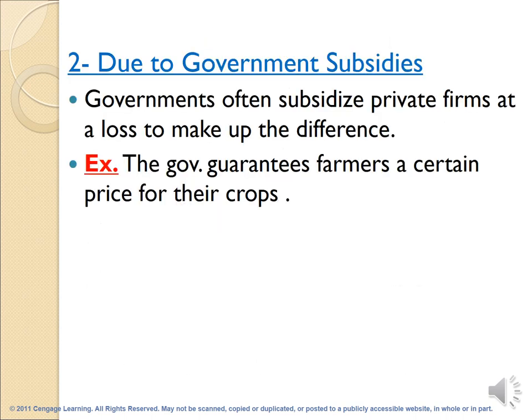Another type of inefficiency in competitive markets is due to government subsidies. Governments often subsidize private firms, making up the difference between the market price and what the firms want to receive. For example, the government may guarantee farmers a certain price for their crops. When the market price falls below this target price, the government pays them a subsidy equal to the difference between the two prices.